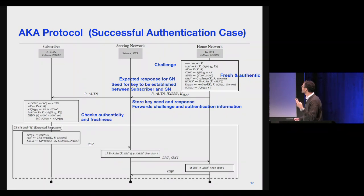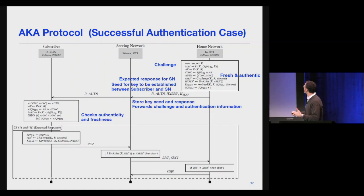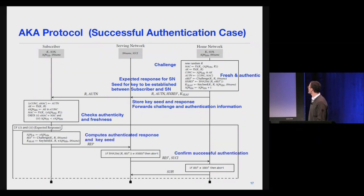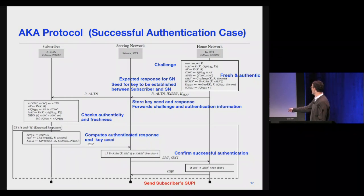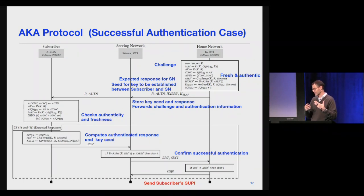If both checks succeed, the subscriber updates its sequence number to match the home network's, computes a response, and computes the same key seed since it has all the data the home network used. It sends the response to the serving network, which checks its legitimacy and forwards it to the home network. If everything succeeds, the home network sends the SUPI to the serving network, so the serving network now knows which subscriber it's talking to — useful for billing and other functions.